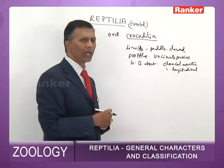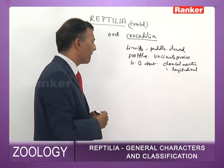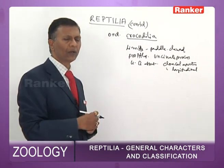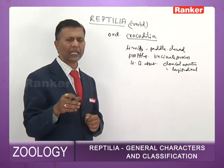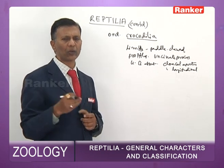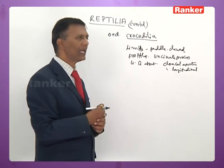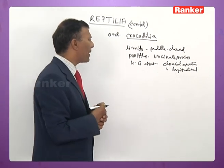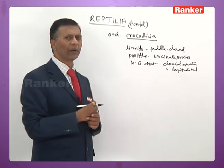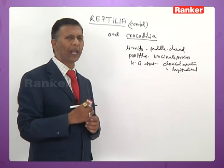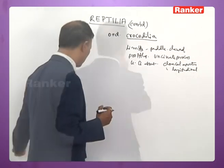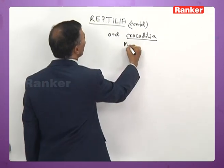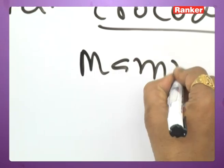Crocodiles are carnivorous oviparous animals that lay eggs in sand burrows. They also exhibit several mammalian characters. The mammalian characteristics of crocodiles include thecodont homodont teeth (unlike other reptiles which are acrodont or pleurodont), and double-headed (bicephalous) ribs like birds and mammals.